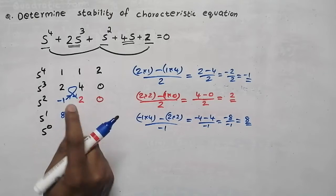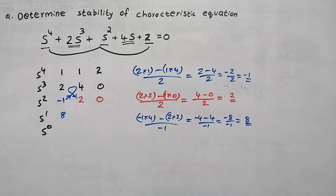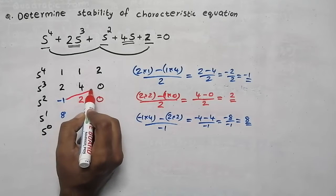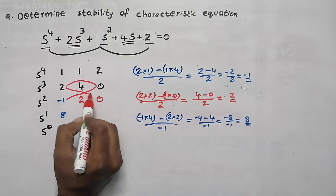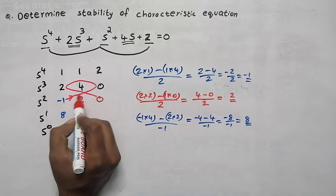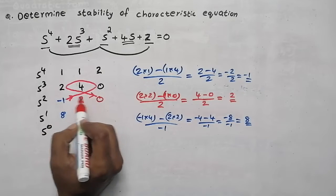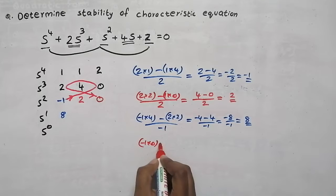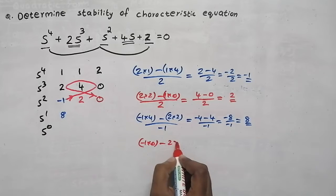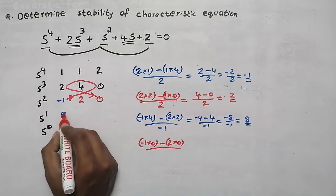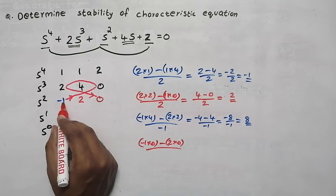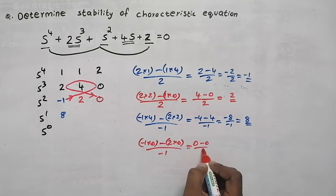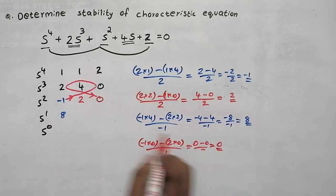For the next element, starting from minus 1: minus 1 into 0 minus 2 into 0, all divided by minus 1. Minus 1 into 0 is 0, minus 0, divided by minus 1 gives 0. So this element is 0.